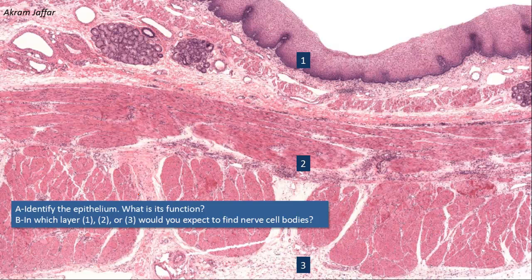The epithelium in this section is stratified squamous epithelium, non-keratinizing. It consists of multiple layers of cells, so it is stratified. The most superficial layers are squamous, thus it is stratified squamous epithelium. Although the deeper layers are polyhedral or cuboidal in shape, the name of the epithelium is derived from the most superficial layer.